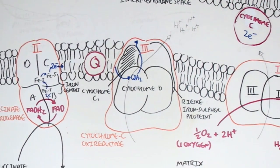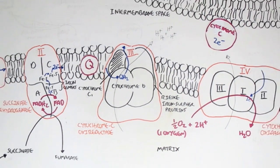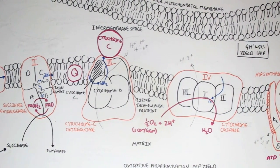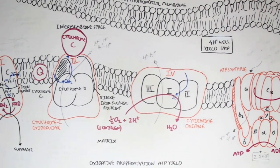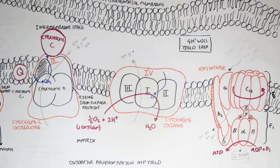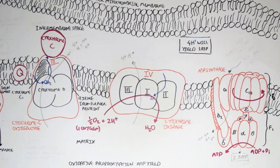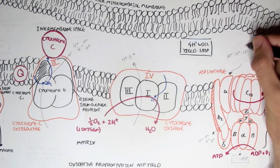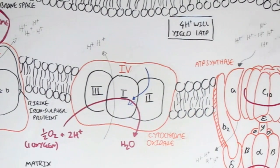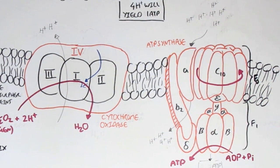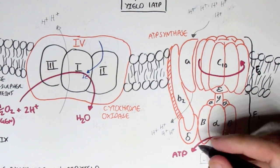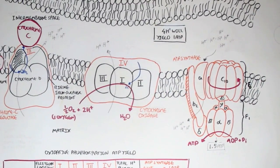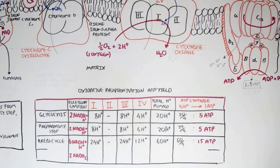The two electrons go to ubiquinone, which turns to ubiquinol, and ubiquinol then travels to complex III, cytochrome C reductase, where it passes the electrons to cytochrome C. Cytochrome C then travels to complex IV, cytochrome oxidase, where complex IV pumps an additional two hydrogen ions from the matrix into the intermembrane space. FADH₂ does not go through complex I. NADH pumps 10 hydrogen ions in total through the electron transport chain; however, FADH₂ only pumps six hydrogen ions. Therefore, six hydrogen ions through ATP synthase will only produce 1.5 ATP, because four hydrogen ions makes one ATP. FADH₂ produces one less ATP than NADH because it does not pass through complex I.